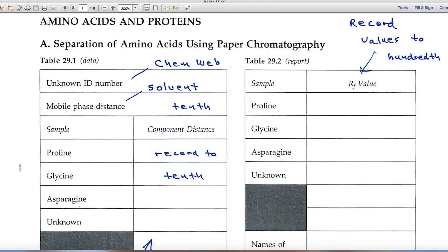The mobile phase, well, another word for mobile is solvent. As the solvent climbs the paper, you'll record the distance that it has moved. And the tenth is your clue that you should record to the tenth. Might be 5.3 or 6.2 or whatever, but record that distance to the tenth.